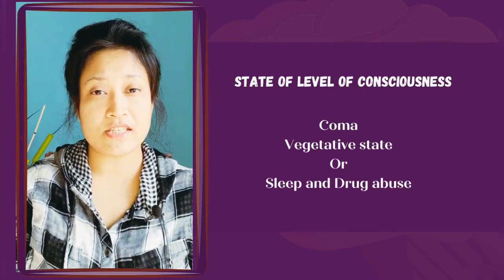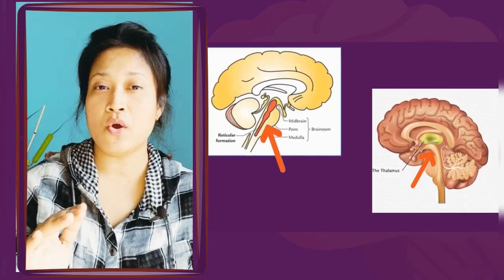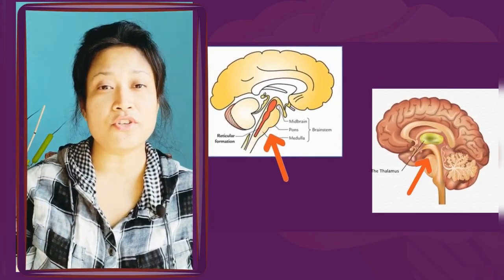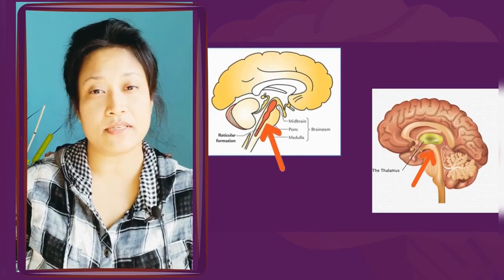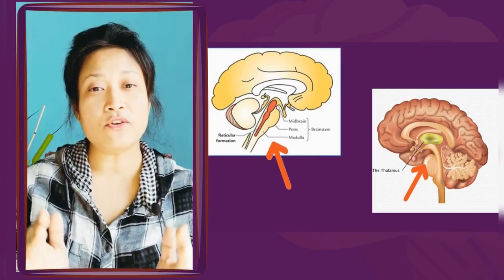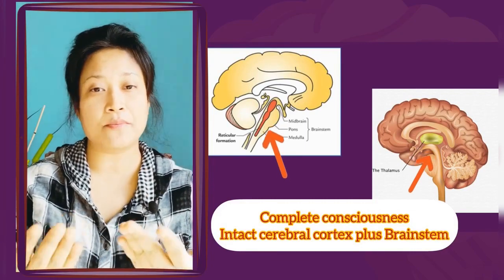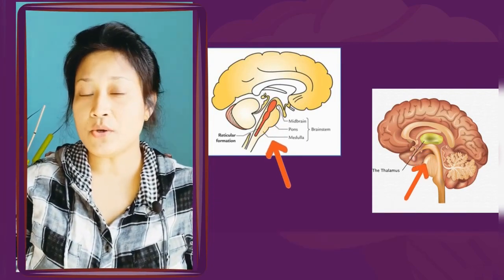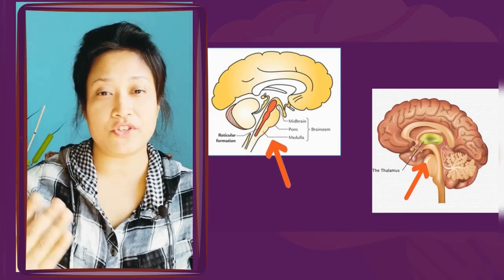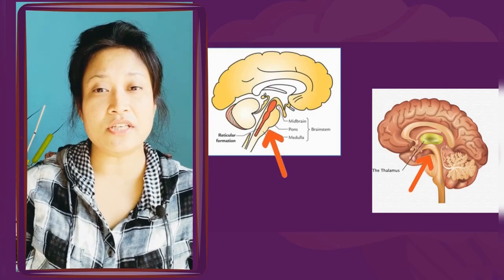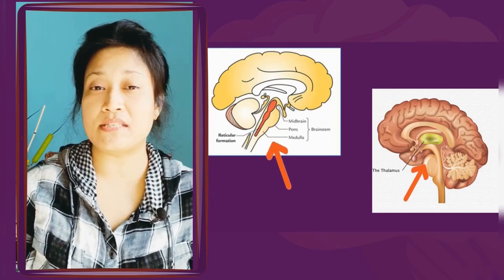Anatomically, the central reticular formation of the brain stem is responsible for arousal, whereas the content of consciousness depends on activities of the cerebral cortex and thalamus. Complete consciousness therefore requires intact activity of both the cerebral hemisphere and brain stem. Acute lesions in both these areas can result in altered consciousness, and if the lesion is slowly developing, it has to be extensive enough to suppress consciousness.